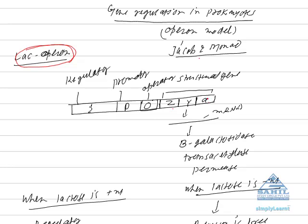These genes on transcription form a polycistronic messenger RNA which is translated into three enzymes: beta galactosidase, transacetylase and permease.